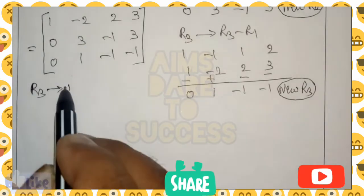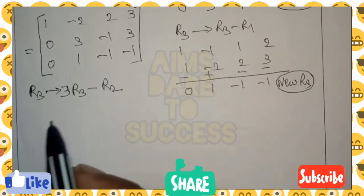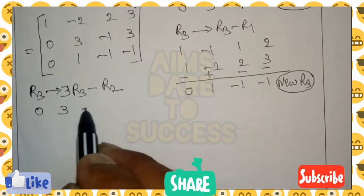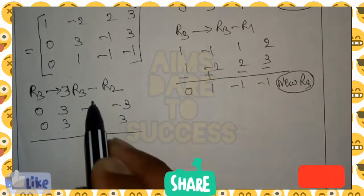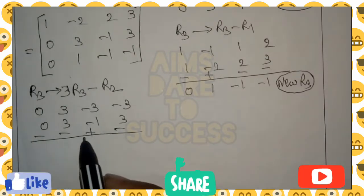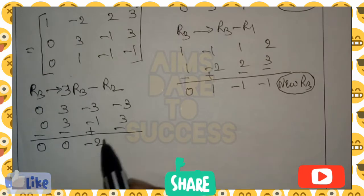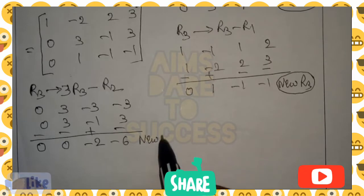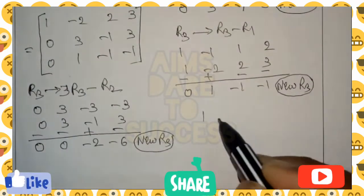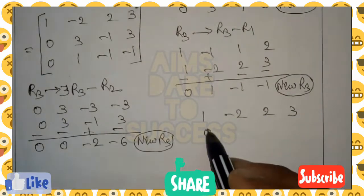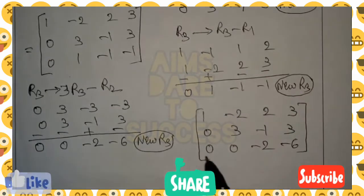So R3 gives rise to 3R3 minus R2 — use R2 only, not R1. Multiply R3 by 3: 0, 3, minus 3, minus 3. Then subtract R2 (0, 3, minus 1, 3). Result: 0 minus 0 is 0; 3 minus 3 is 0; minus 3 minus minus 1 gives minus 2; minus 3 minus 3 is minus 6. This is the new R3. R1 and R2 remain the same: R1 is 1, minus 2, 2, 3; R2 is 0, 3, minus 1, 3; new R3 is 0, 0, minus 2, minus 6. We got the L symbol 1000 values — our procedure is maximum completed.